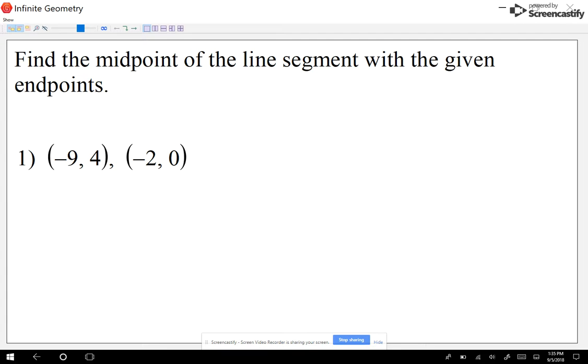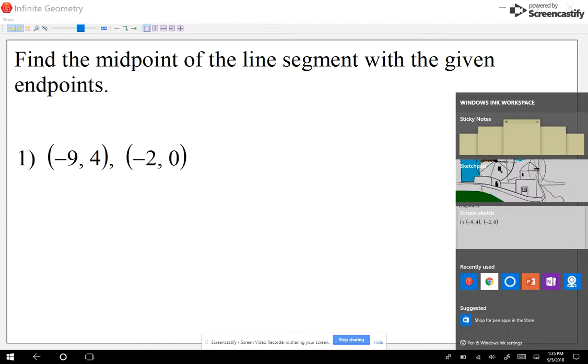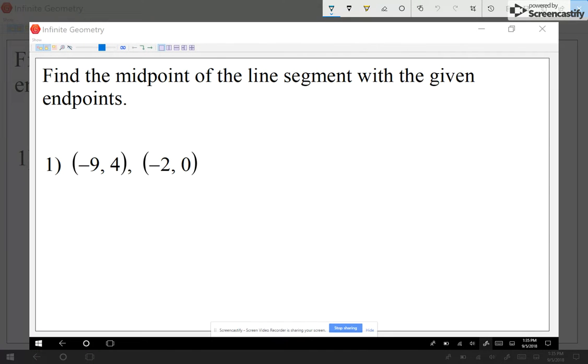Let's take a look at the first review for this unit. First thing is find the midpoint of the line segment with the given endpoints. So you're given the two endpoints and you have to find the midpoint. For us to find the x value of the midpoint, I'm gonna look at the x values that are given.